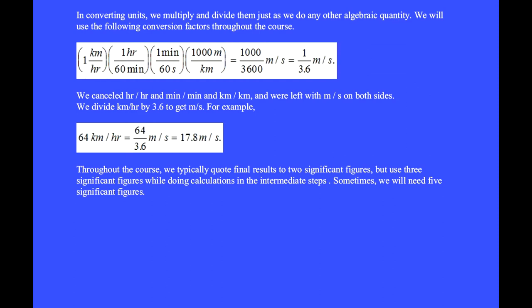It's 1 hour per 60 minutes. Next, to convert minutes to seconds. Here, we put minutes on the top to cancel minutes on the bottom. Next, we convert kilometers into 1,000 meters. We put kilometer on the bottom here to cancel kilometer on the top there. We have 1,000 divided by 60 times 60 makes 3,600. 1,000 over 3,600 is the same thing as 1 over 3.6.